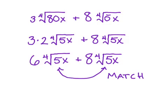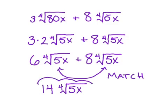And we add them the same way we would add like terms if they were just variables here. We end up adding the coefficients, the numbers out front. So we end up with 14 times the fourth root of 5x. That's our simplified answer, down to just one radical from the original two we had.